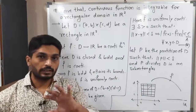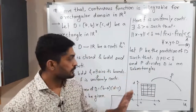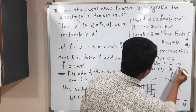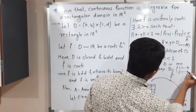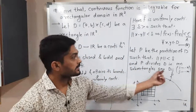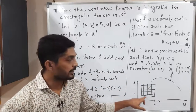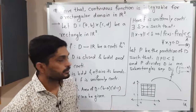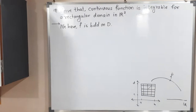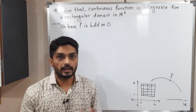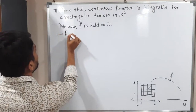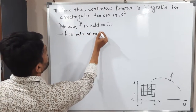That means when you take the partition, the rectangle is divided into M rows and N columns. We call them D_ij, with i running from 1 to M and j running from 1 to N — so D_11, D_12, D_13, D_21, D_22, D_23, and so on. Since F is bounded on D, it is also bounded on each sub-rectangle D_ij.